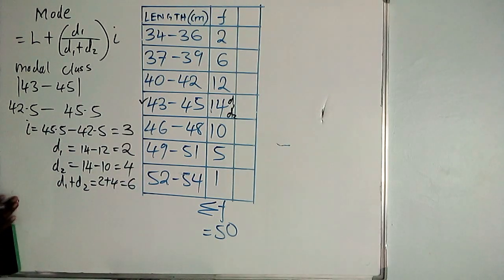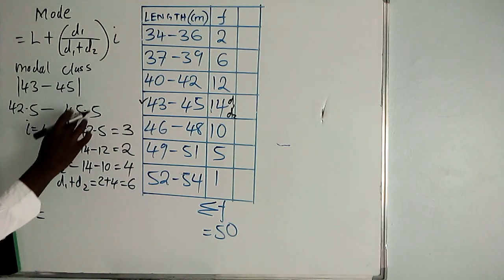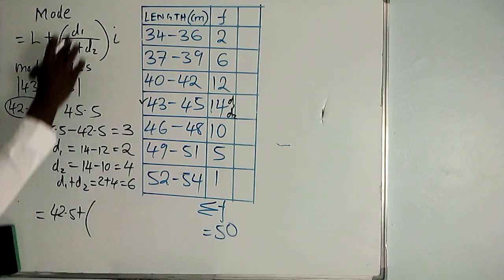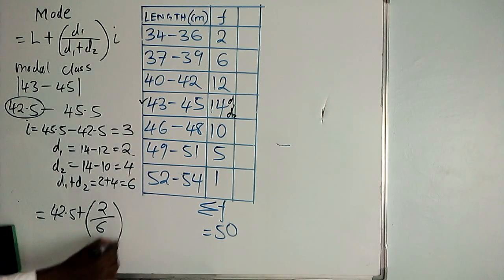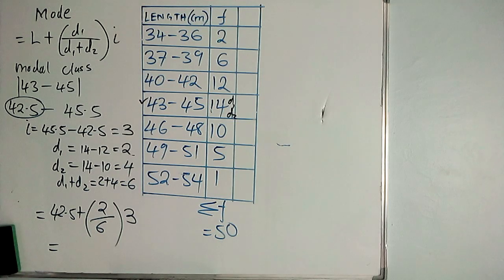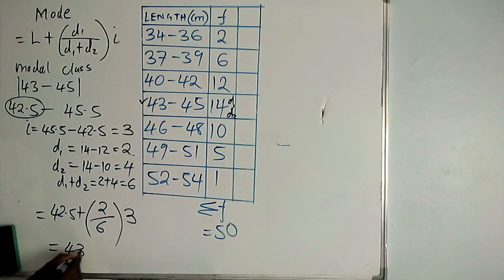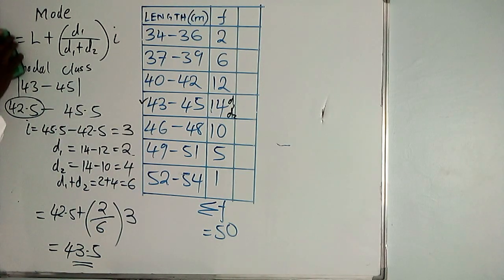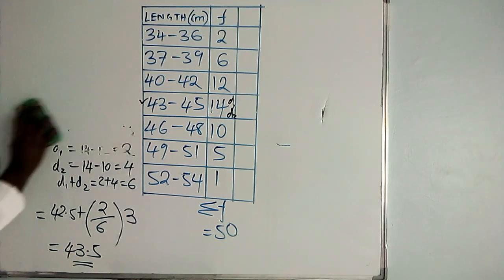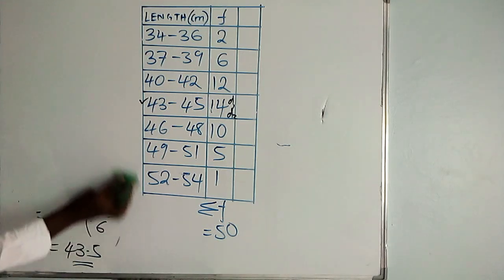Now substitute everything into the formula. The lower class limit of the modal class is 42.5, plus in brackets d1 (which is 2) over d1 plus d2 (which is 6), then multiplied by the class interval (which is 3). Working this out on the calculator gives you 43.5. So the mode is 43.5, which falls within the class limits as expected.